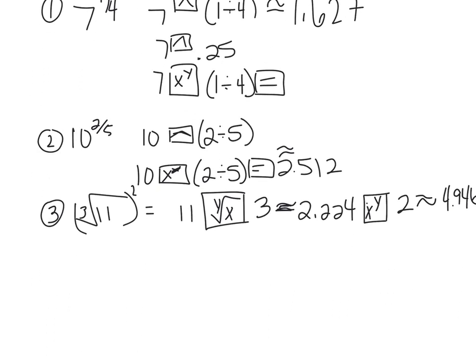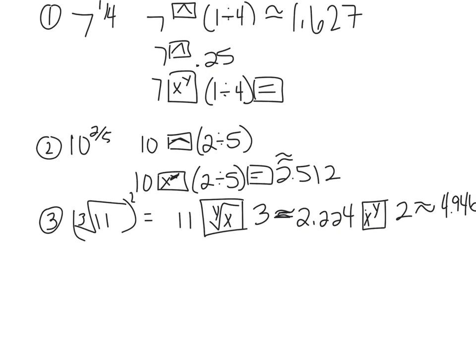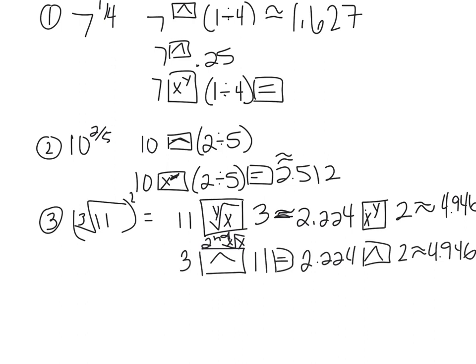In the other calculators, you're actually going to hit the 3 first. If you are using the TI calculators, you're going to hit 3, and then you should notice above the caret button it's going to say, it's either X radical Y - I think it's X radical Y - and then you'll put the 11, and then I would hit equals, and then take that answer, 2.224, and then raise it to the second power, and that'll give you 4.946.